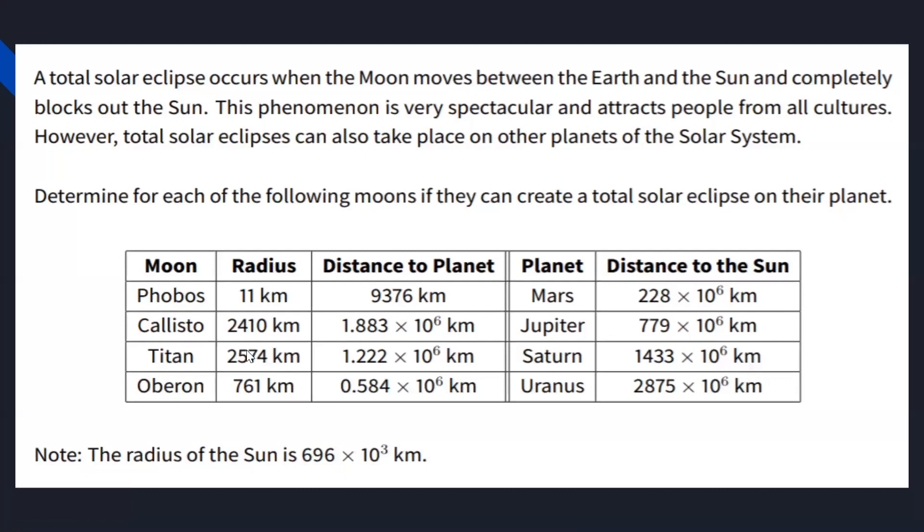A total solar eclipse occurs when the moon moves between the earth and the sun and completely blocks out the sun. This phenomenon is very spectacular and attracts people from all cultures. However, total solar eclipse can also take place on other planets of the solar system. Determine for each of the following moons if they can create a total solar eclipse. So they are asking whether the mentioned moons like Phobos, Callisto, Titan, and Oberon can create a total solar eclipse.